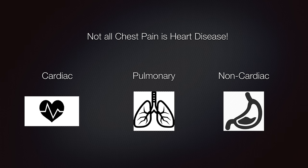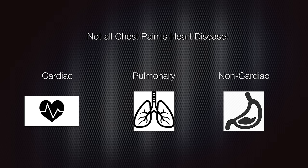Now that we've talked about the history, the physical, and the different lab tests needed for assessment and evaluation of chest pain, let's talk about the differential diagnosis. What are the different types of underlying conditions that can result in symptoms consistent with chest pain? The different types of diseases are broken down under three components: cardiac, pulmonary, and non-cardiac.